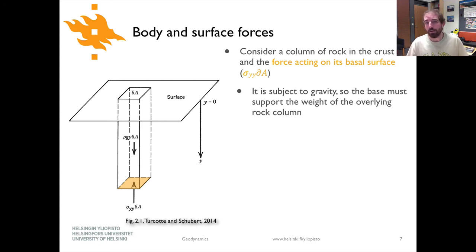Okay, so now let's take a look at an example of body and surface forces. Here we'll consider a column of rock that's shown here on the figure on the left side out of the Turcotte and Schubert geodynamics textbook, as well as the force acting on the basal surface highlighted here in orange at the bottom of this rock column. The column of rock is on earth, so it's subject to gravity, and because of that the base of this column of rock must support the overlying rock column. So we're basically holding it up with a force on the bottom of this column of rock.